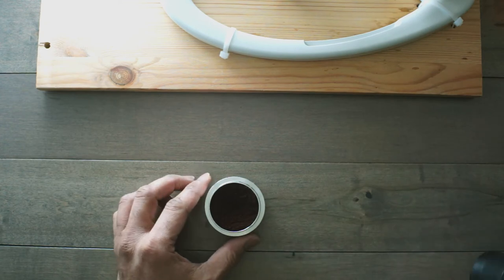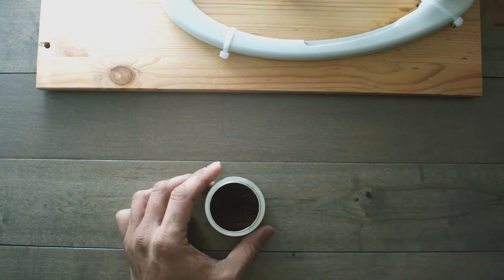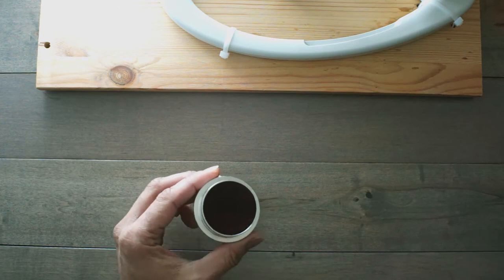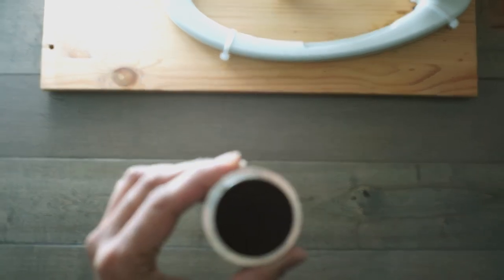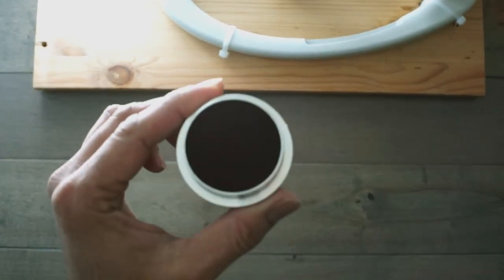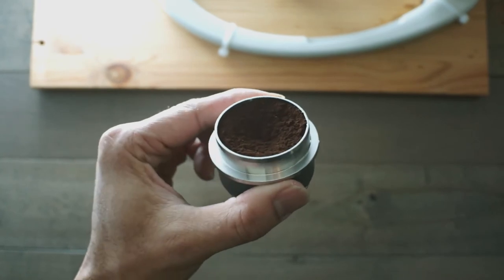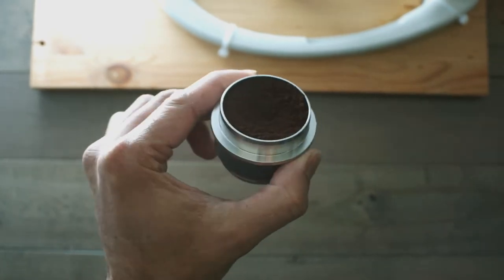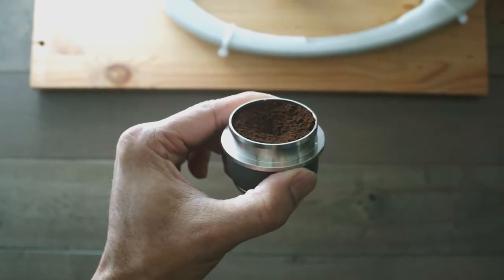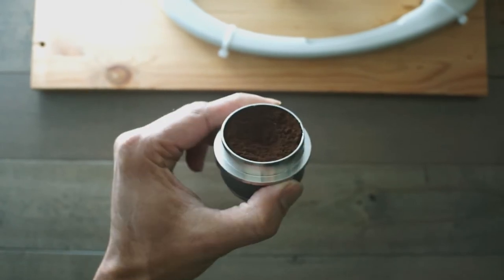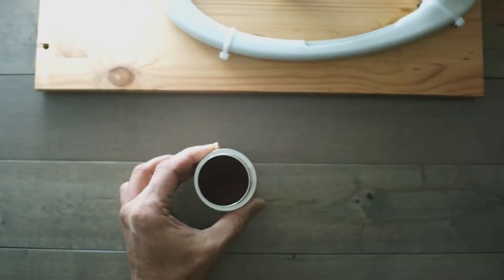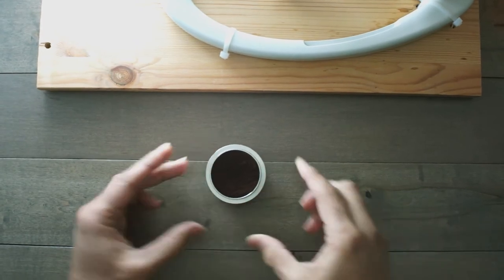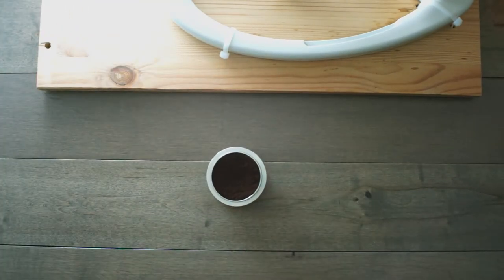Also this is unconventional but I distribute the grounds in a concave pattern. Typically you want an even distribution so that there's even resistance throughout the puck. But with this tapered basket I think the puck being more dense as you move away from the center actually helps counteract water flow issues. I'm still evaluating this idea but so far I've been getting better results.